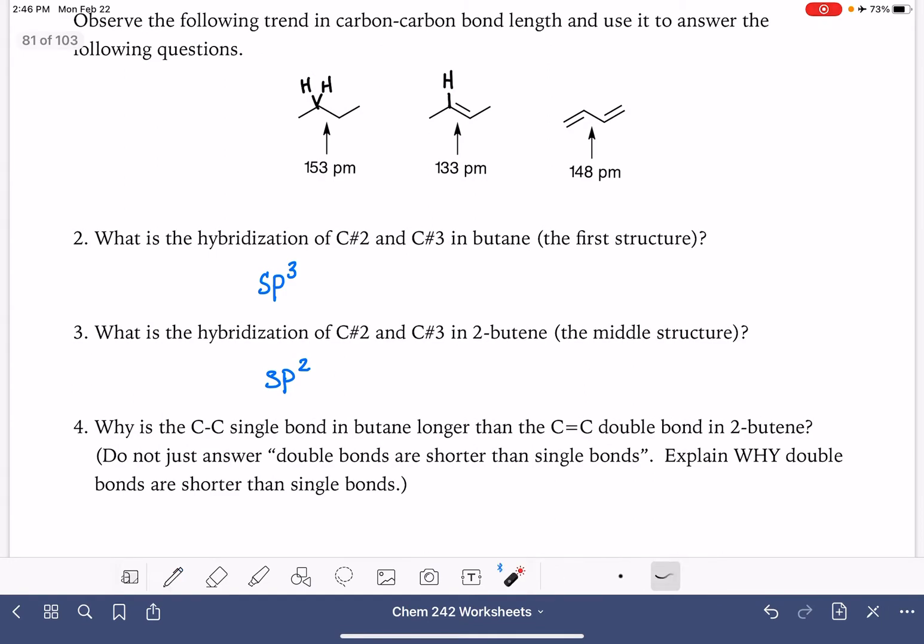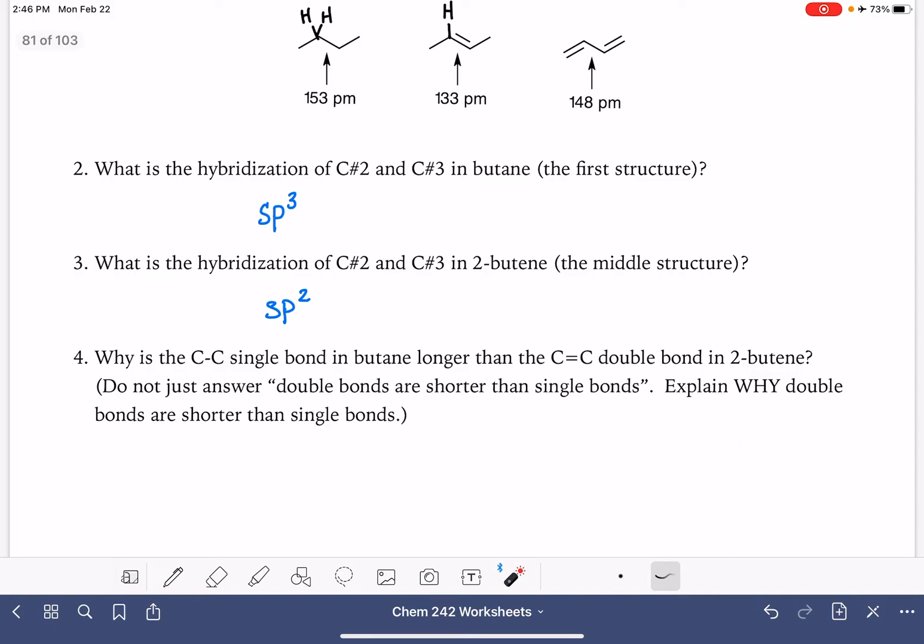In general, it's asking why is the carbon-carbon single bond longer than the carbon-carbon double bond. We know as a rule that double bonds are shorter than single bonds, but we're asking why that might be the case. This has to do with the hybridization of the carbon atom that's being used for the bond.